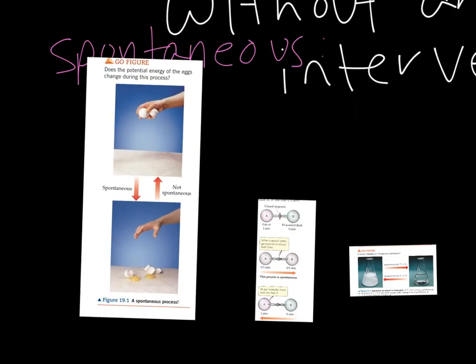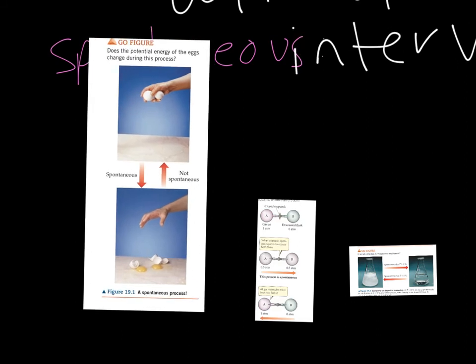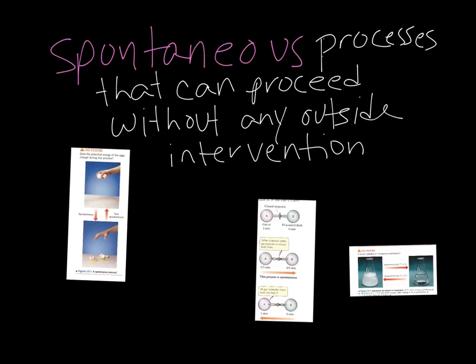Here we have, if we drop an egg, the egg falls and the egg breaks. That is spontaneous. Once you let go of the egg it will fall and it will break. That process, the egg breaking after you let go, is spontaneous. What's not spontaneous: the egg is not going to put itself back together and go back into your hand. That reverse process will not happen without some sort of very special outside intervention.